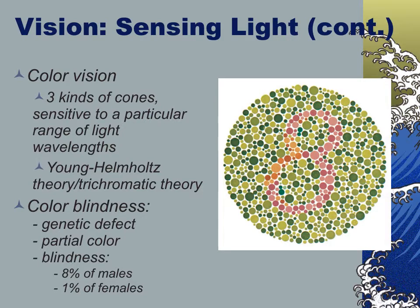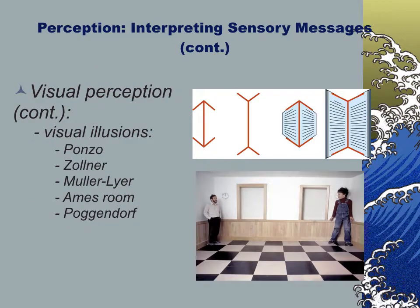Color blindness does affect a certain number of people, and it is passed on through genes. There are more males than females with color blindness, with different arguments as to why. Evolutionary psychology may argue that men needed to make fine-grained distinctions at night because they were hunting.